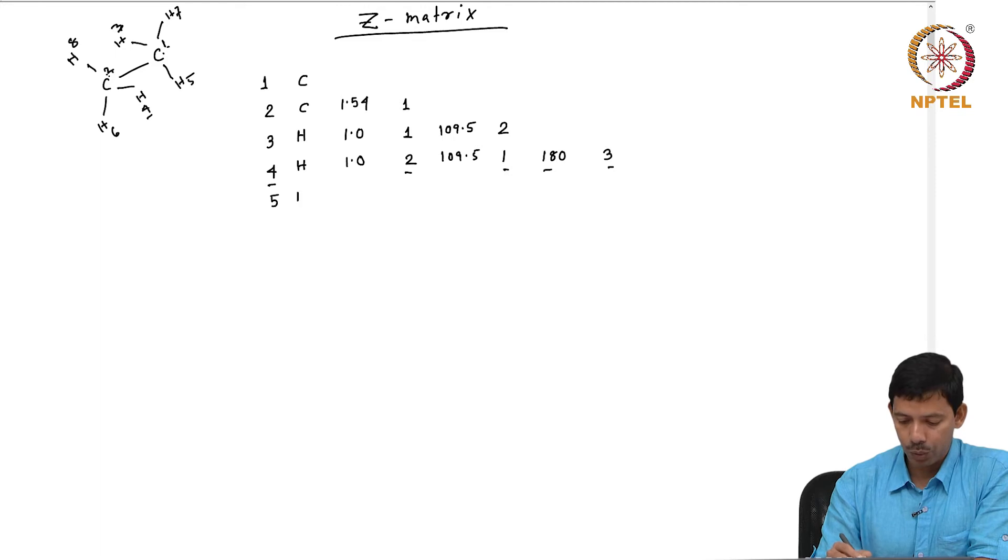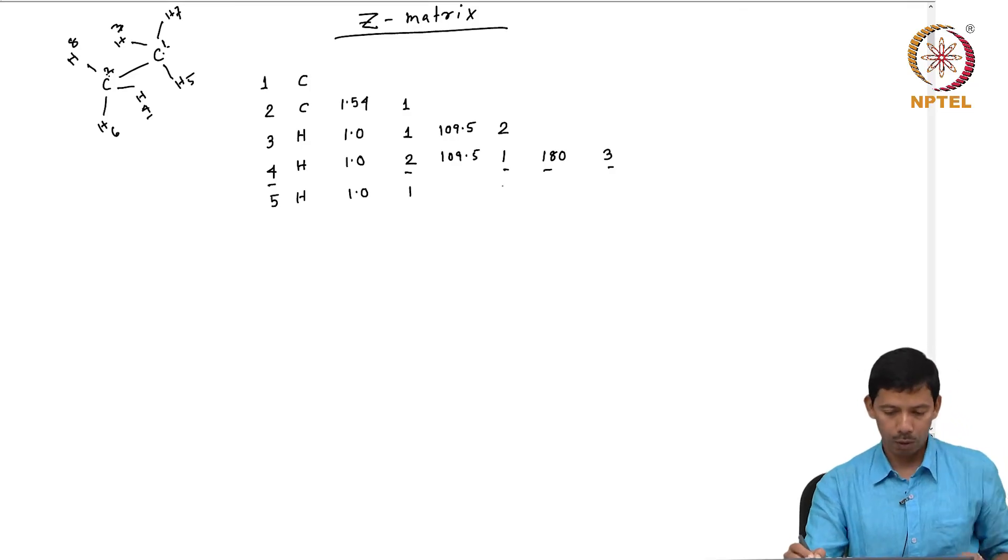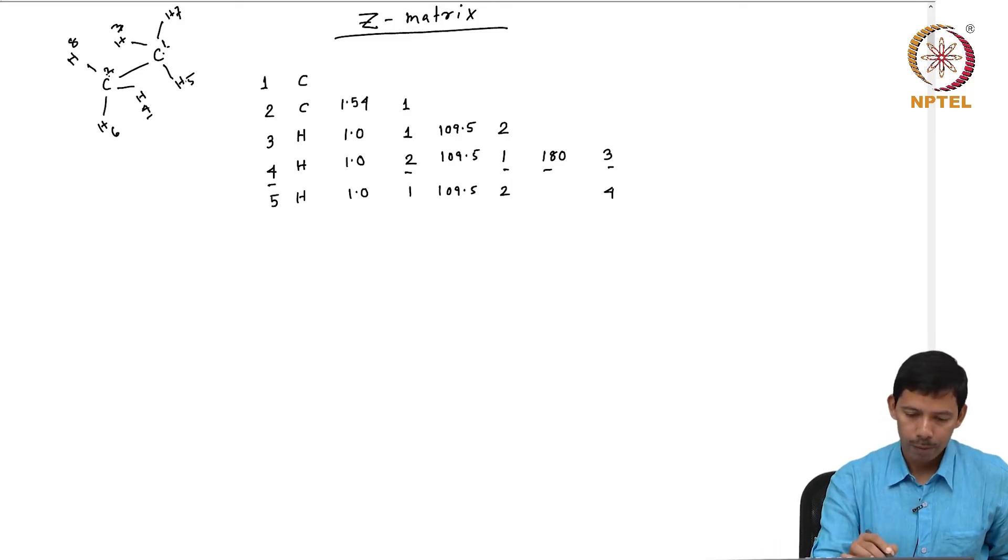Similarly, 5 is also hydrogen connected to 1 by 1.0. It makes an angle of 5, 1, 2 of angle value 109.5. It forms a dihedral with 5, 1, 2, 4 and that angle is 60 degree.